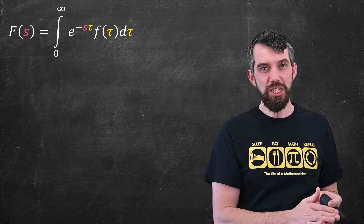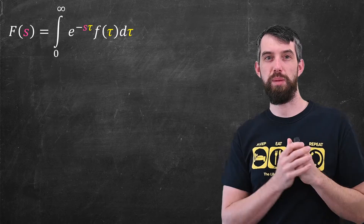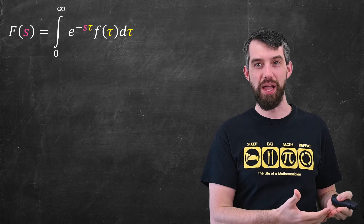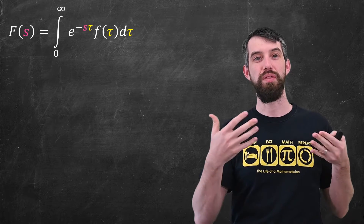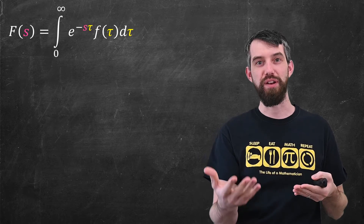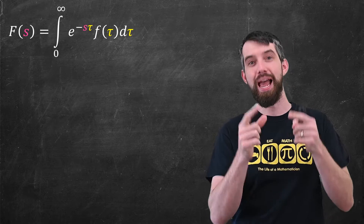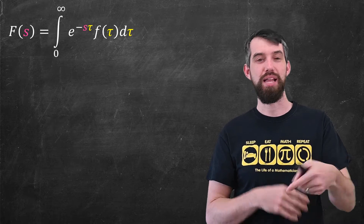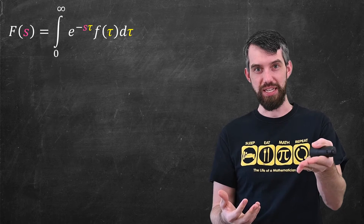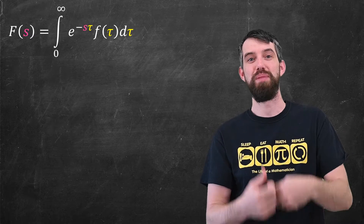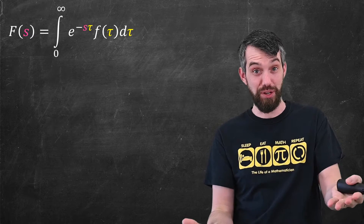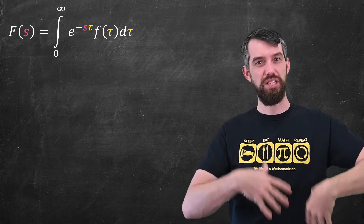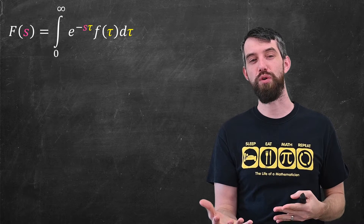I really like this because it allows me to take a lot of piecewise defined functions that have discontinuities and just write them as a product of a step function, which we understand very well, and some other function. So the question is: how do I take the Laplace transform of things of this nature? Let me begin with the definition of the Laplace transform. The capital F of s is defined to be the integral from zero up to infinity of e to the minus s·tau, times f of tau, d tau — tau is just a dummy variable. That's the definition of the Laplace transform.